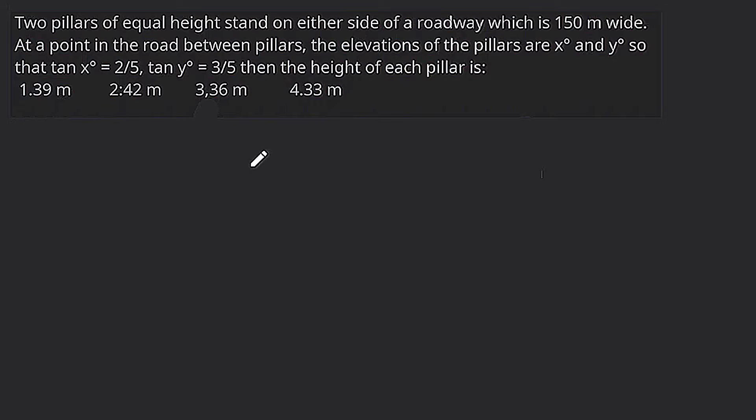Hello student, good evening, welcome back. So our question is: two pillars of equal height stand on either side of a roadway which is 150 meter wide. At a point in the road between the pillars, the elevations of pillars are x degree and y degree so that tan x degree is equal to 2 by 5, tan y degree is equal to 3 by 5. Then the height of each pillar is?